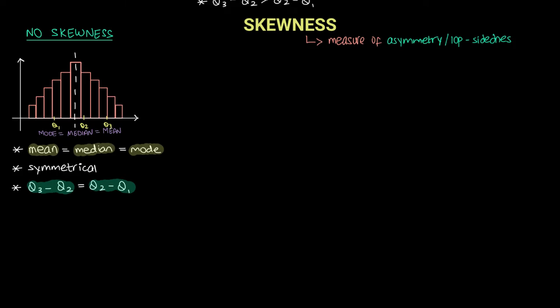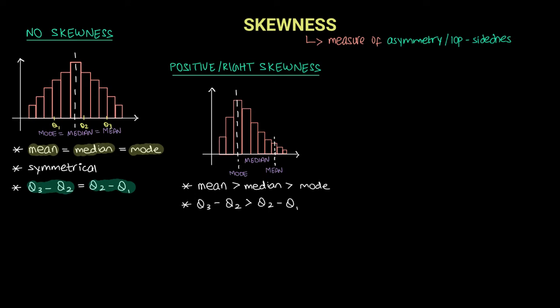Now let's talk about positive skewness, or right skewness. We can see tapering on the right side of the graph — the graph is tapering towards the right. The majority of the data lies on the left side of the distribution, as that bar is very high, implying a high frequency. We can also notice there are some extremely high values. As we go to the right, the data value increases, but there are very few of these extremely high values on the right side of the graph.